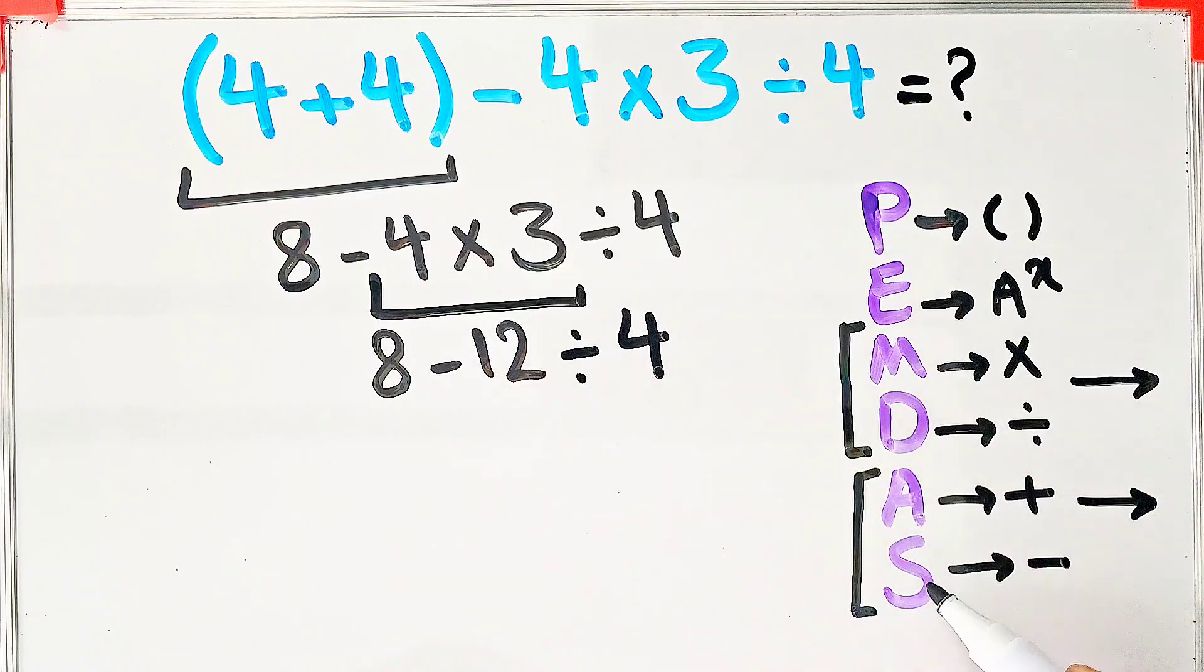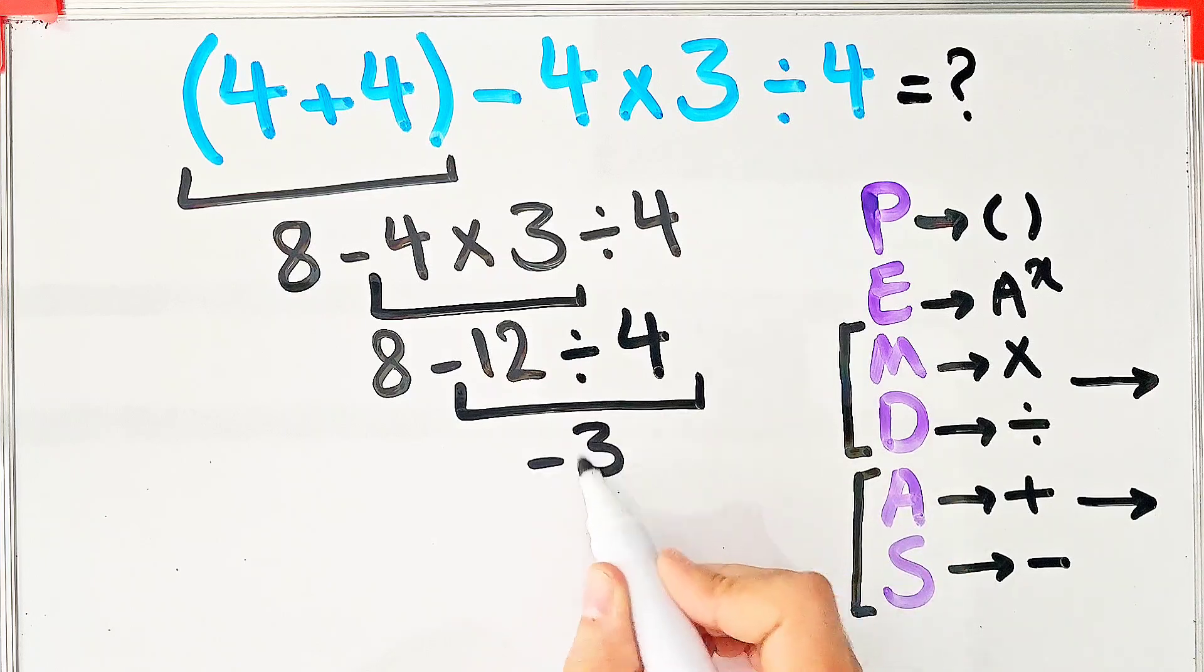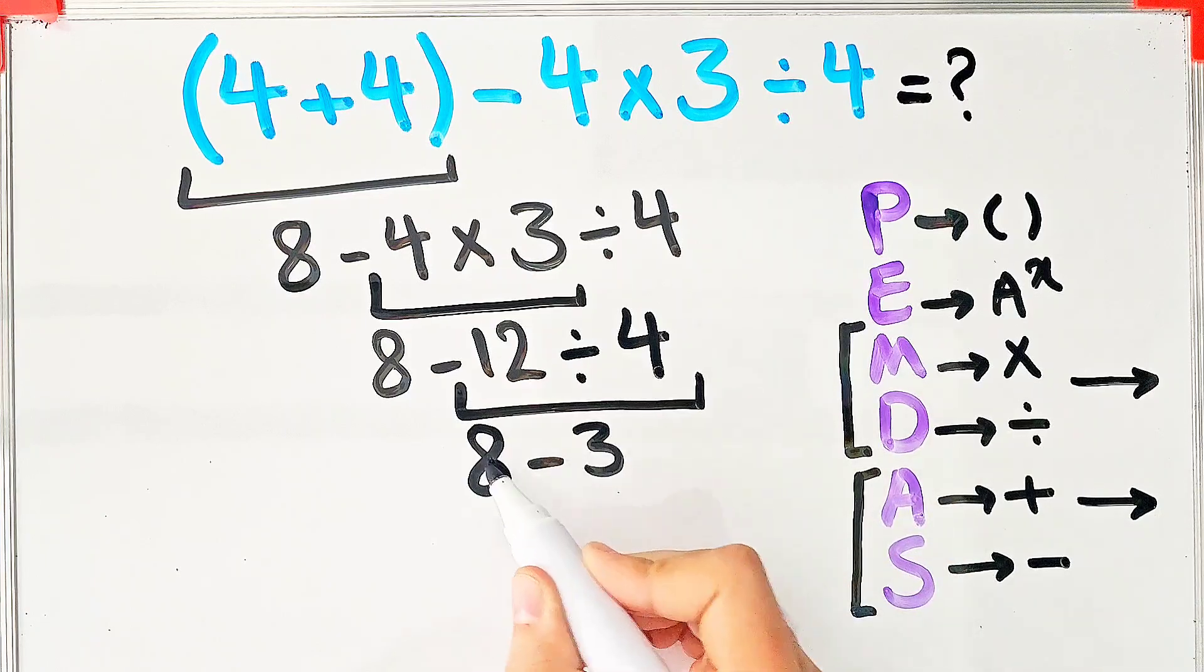Negative 12 divided by 4 equals negative 3. And 8 minus 3 equals 5. The final answer is 5.